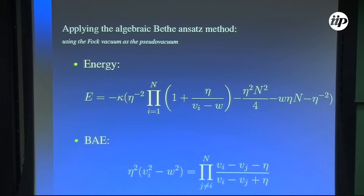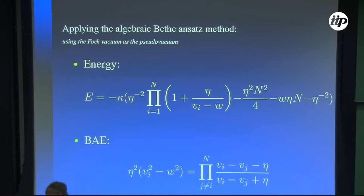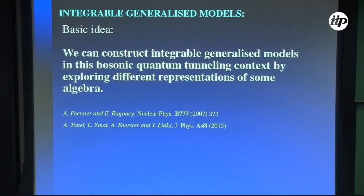If we can solve the eigenvalue problem for the transfer matrix, we find a solution for the Hamiltonian — this is integrability, the exact solution. Applying the algebraic Bethe ansatz method, we arrive at the energies. The v_i are solutions to the Bethe ansatz equations. Each solution provides an eigenvector with its corresponding energy. We have a finite number of solutions; one will be the ground state and the others the excitations. What is very beautiful about the Bethe ansatz is that we get all the energies — it gives the full spectrum, not only the ground state. It's very powerful.